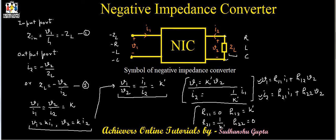These are the values of hybrid parameters for the negative impedance converter. From these values, we can also say that the negative impedance converter is a non-reciprocal device, because for a reciprocal network, H21 should be equal to negative of H12. For the negative impedance converter, we can see that this relation does not hold true — that is, H21 is not equal to minus H12. So, the negative impedance converter is a non-reciprocal device.